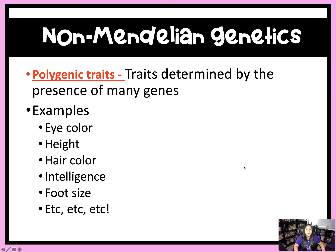Now we're going to jump into polygenic traits. These are traits that are determined by the presence of many genes. This is often common in human genes — for example, eye color, height, hair color, intelligence, foot size, and many other traits in humans are determined by their presence on multiple different genes.